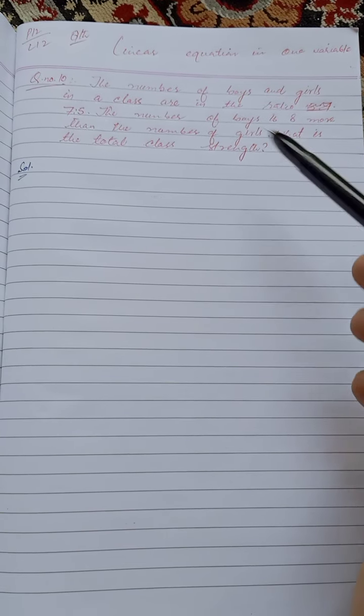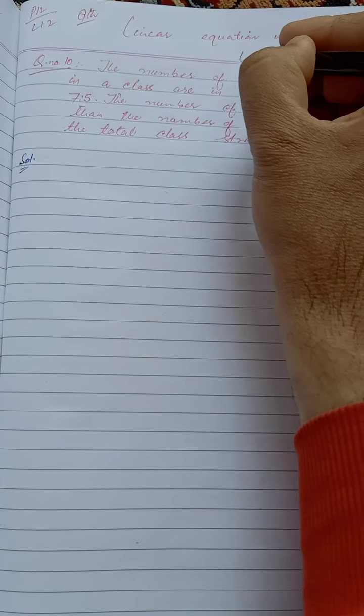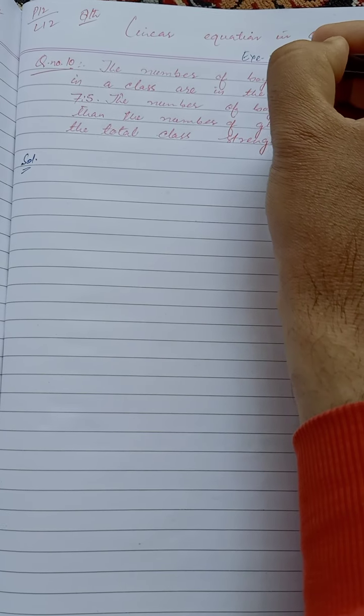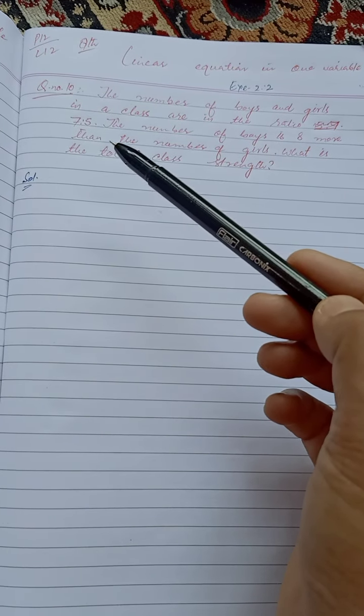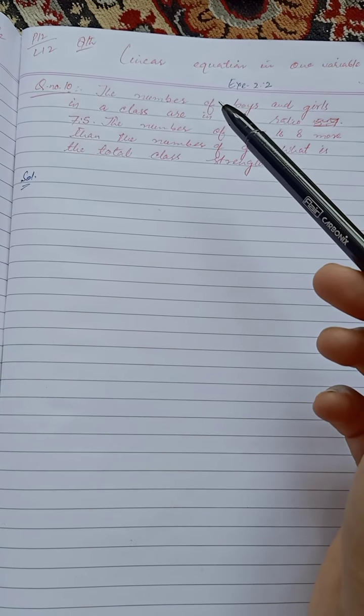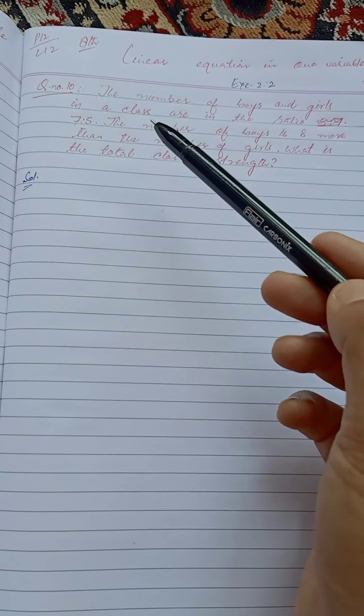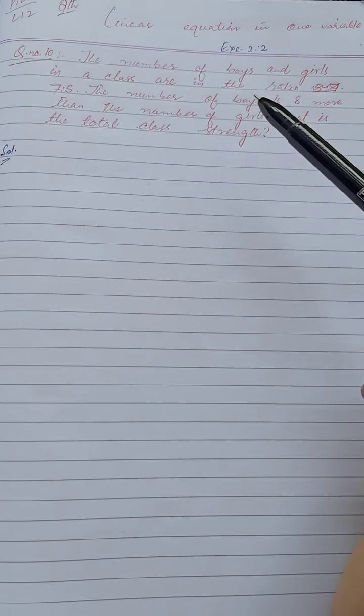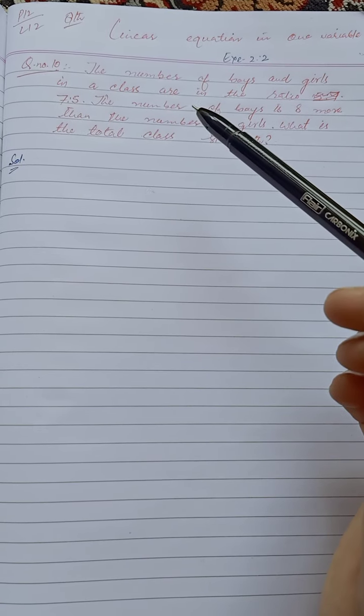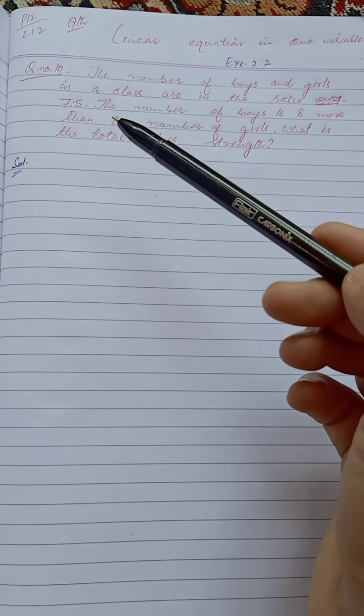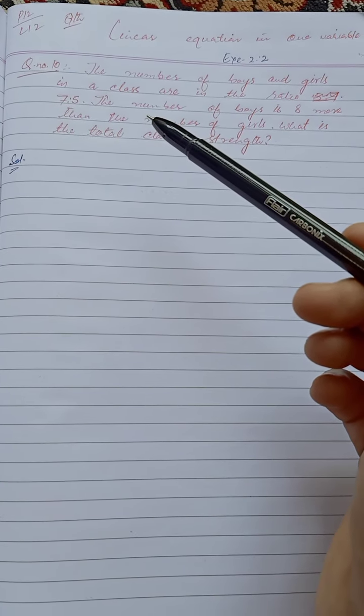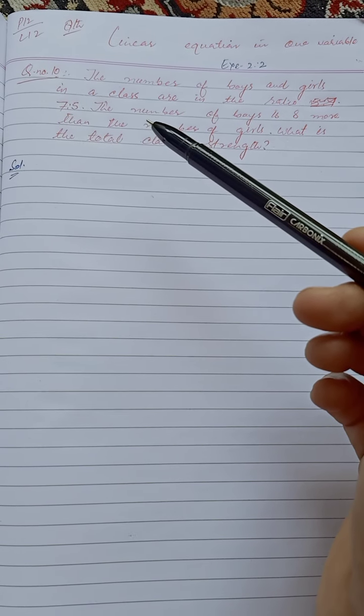Assalamu alaikum dear viewers, hope you are all fine. Today's class is Chapter 6, Linear Equation in One Variable, Exercise 2.2, Question Number 10. The question states: The number of boys and girls in a class are in the ratio 7 is to 5. If there are 8 more boys than girls in the class.